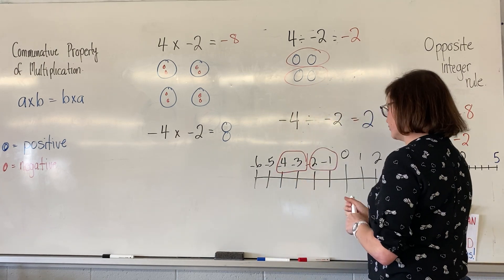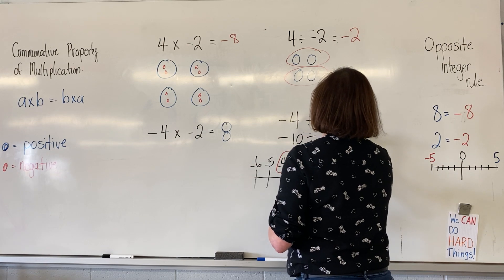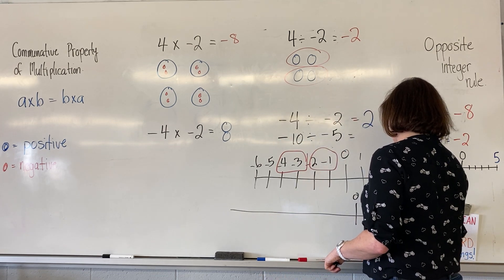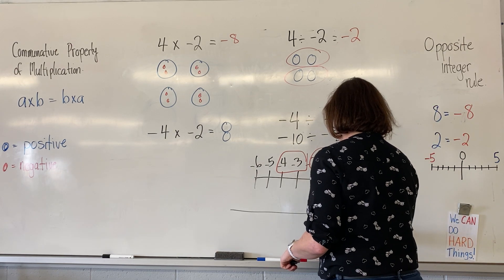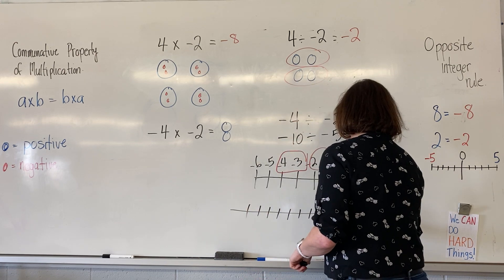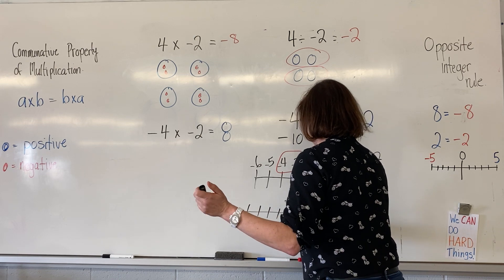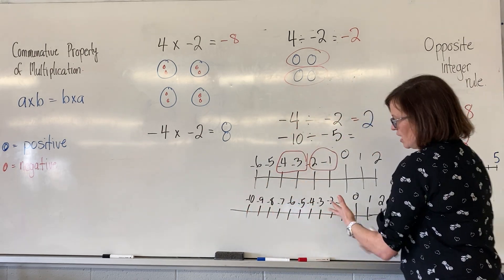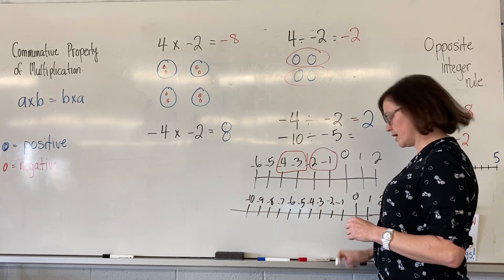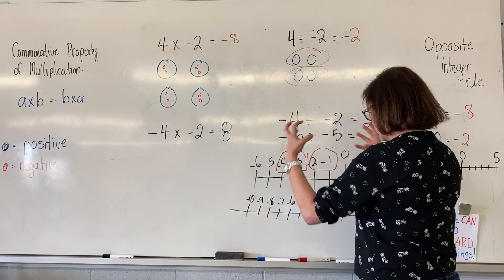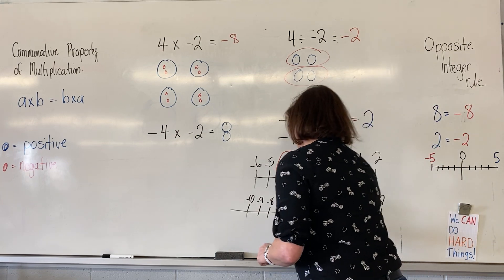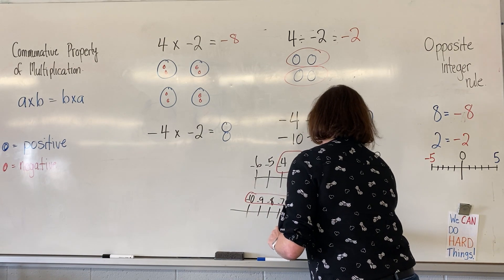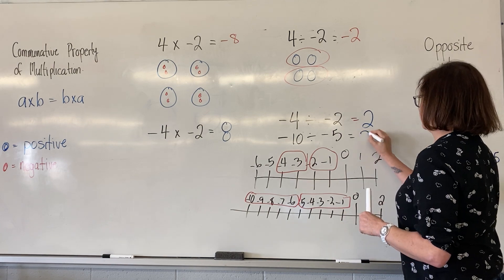Let me do this one again. Negative ten divided by negative five. I'll use my number line again — zero, then positive one through ten, and negative one through negative ten. I'm trying to divide up my negative ten in equal groups of negative five to get back to zero. Here's one group of five, and here's another group of five. So I end up with two groups — negative ten divided by negative five equals positive two.